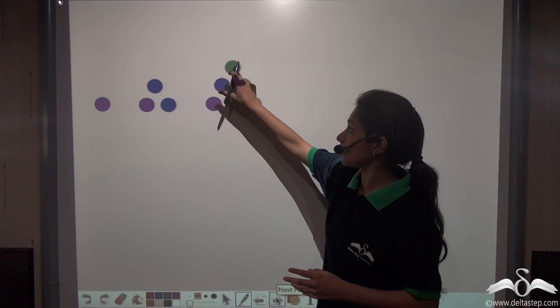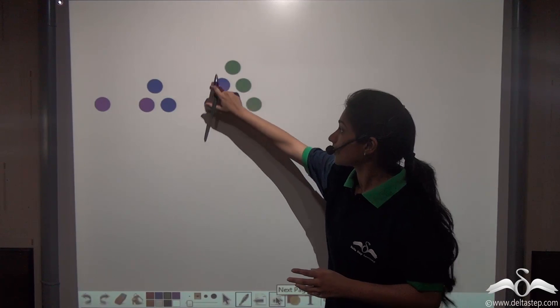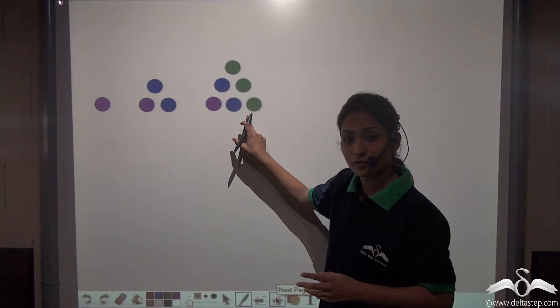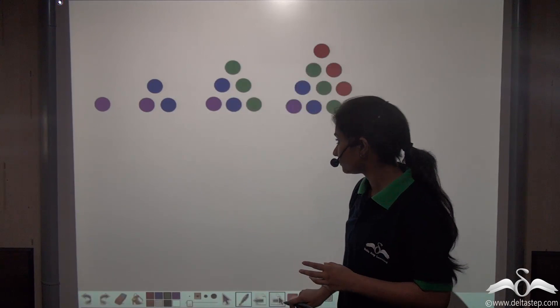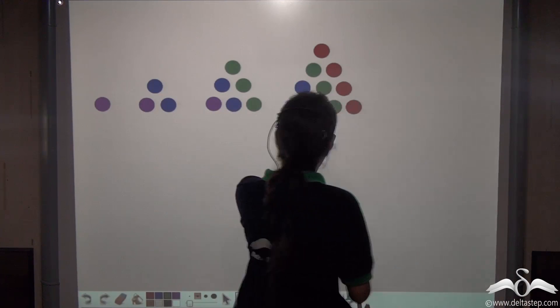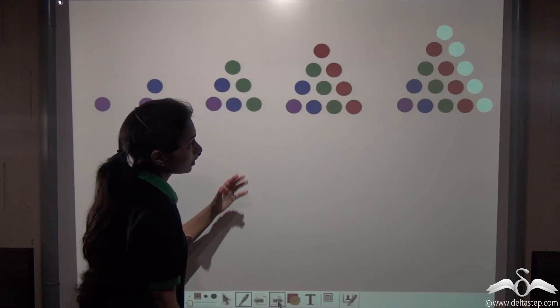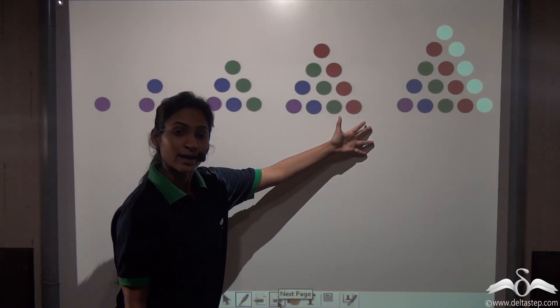Similarly, one, two, three, four, five, six, they also combine to form an equilateral triangle. Again we form equilateral triangles and see this can go on increasing.